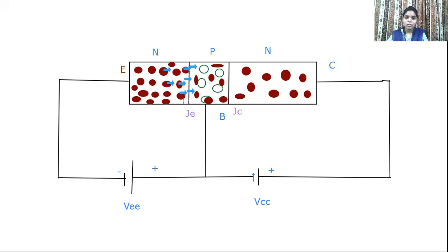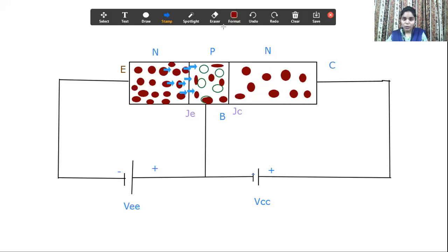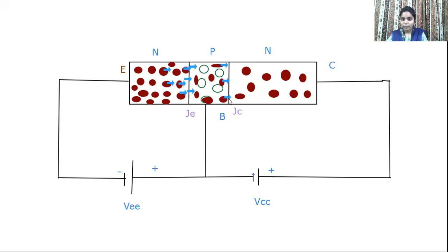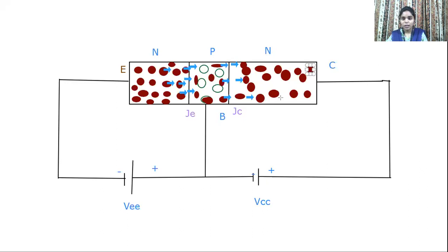A few electrons recombine with the holes in the base, while the remaining electrons move towards the collector and cross the collector-base junction Jc. These electrons then arrive at the collector side. Due to this electron movement, we can name the currents and give directions to IE, IB, and IC.